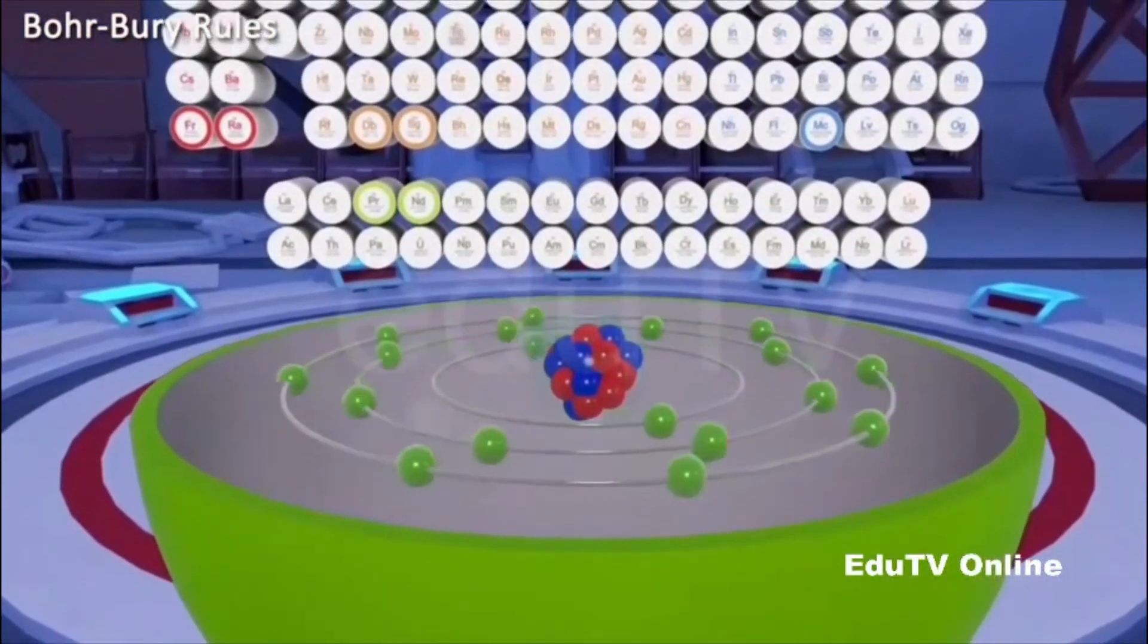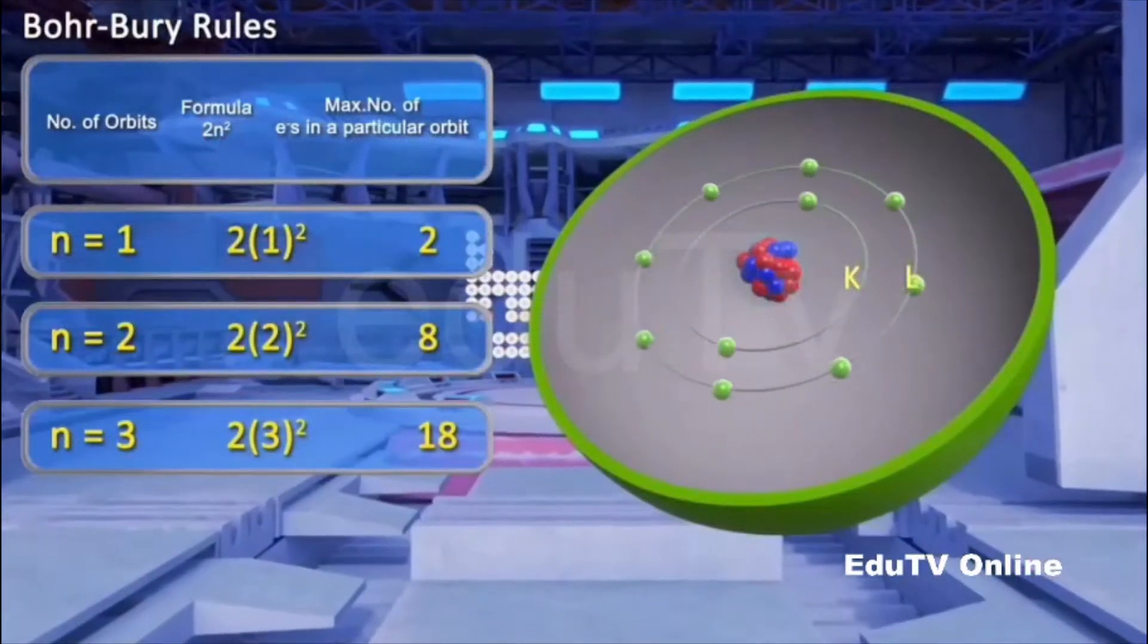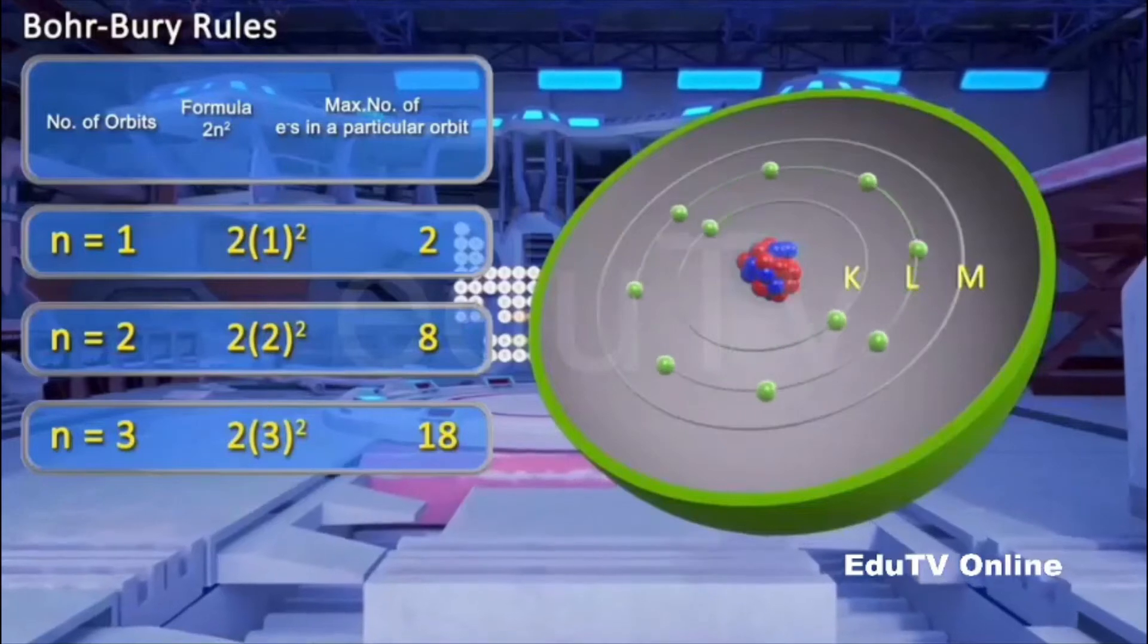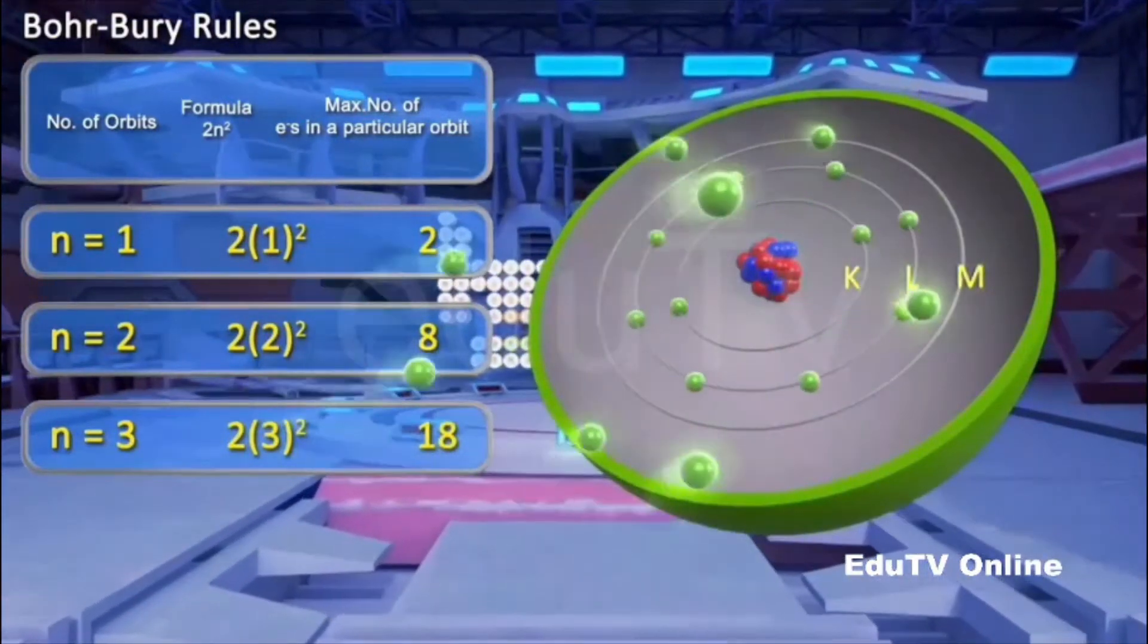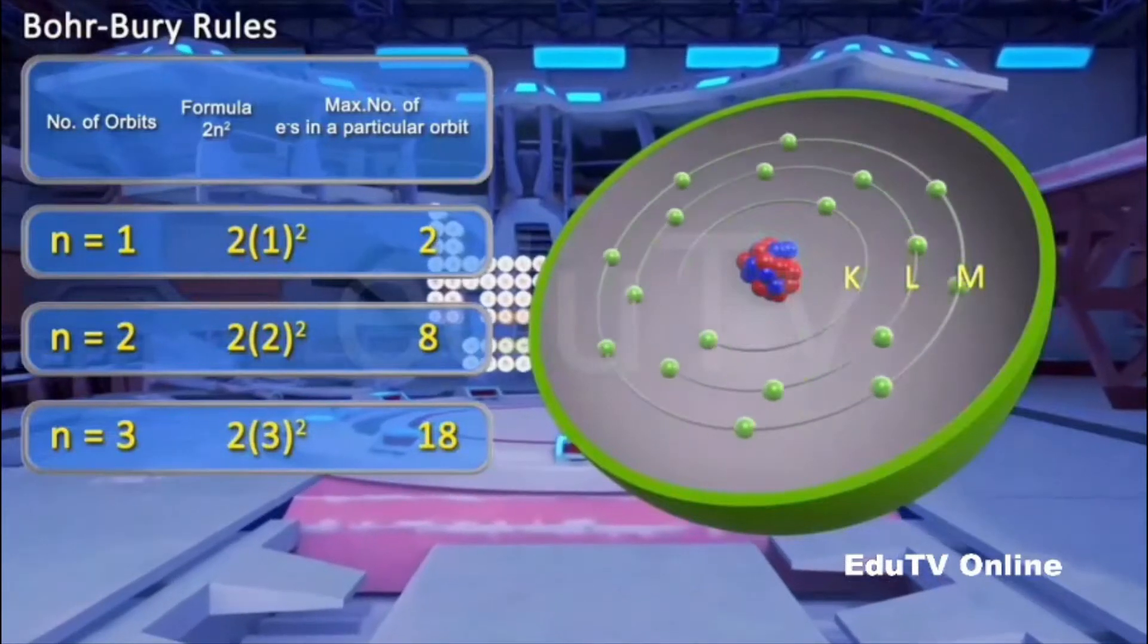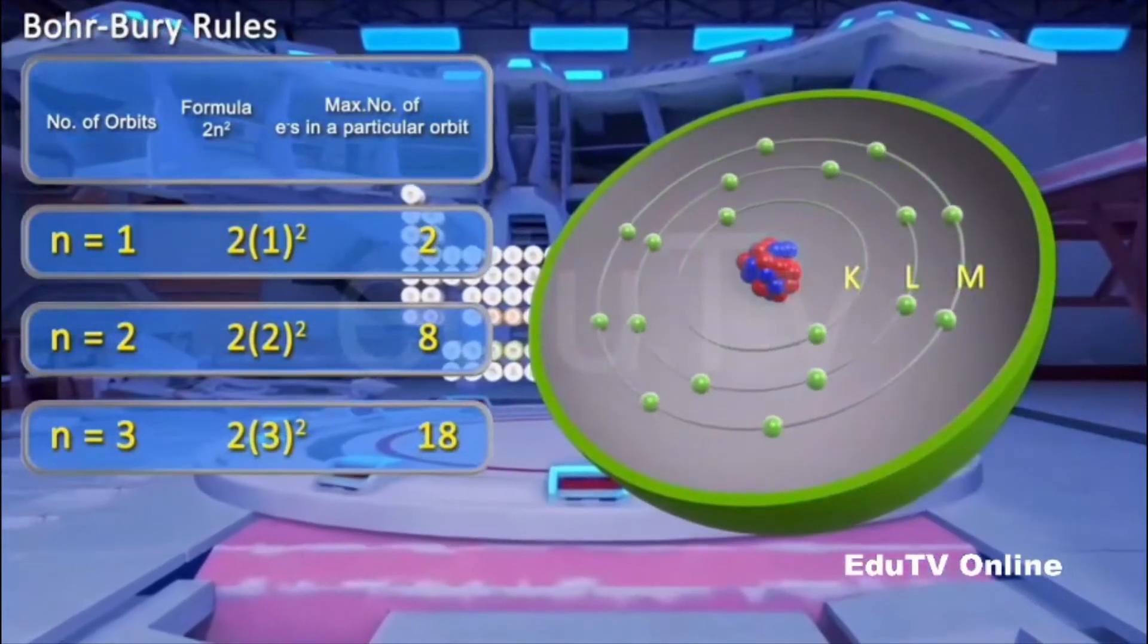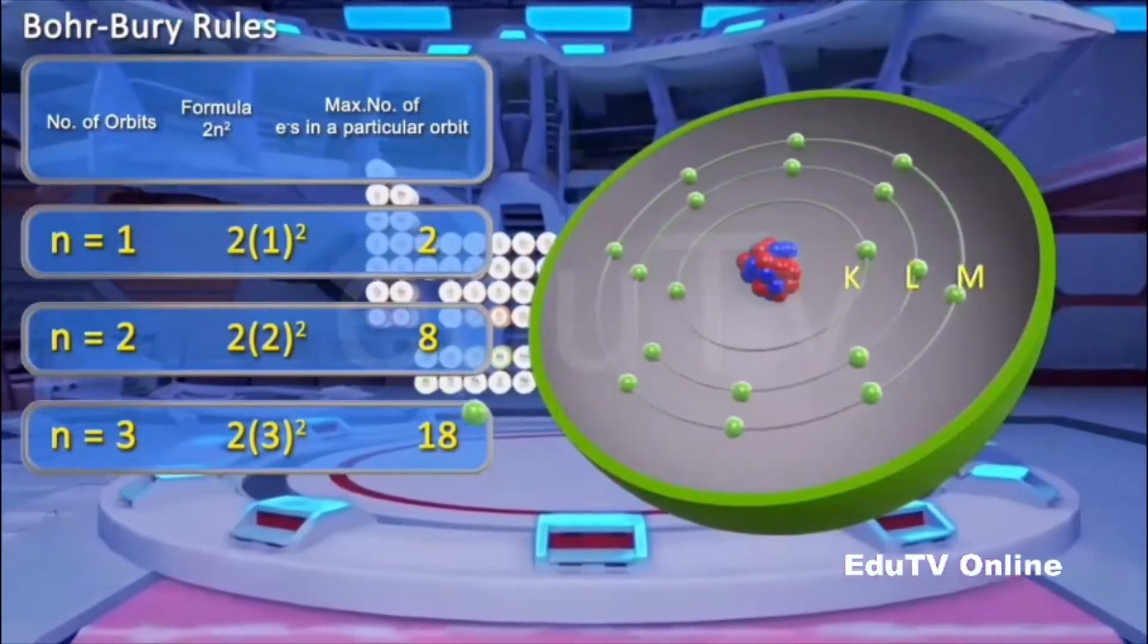For example, the third orbit can accommodate a maximum of 18 electrons. So when 8 electrons occupy the third orbit, or shell M, the atom gains a certain degree of stability. Hence, the next electron, instead of entering the third orbit, goes into the fourth orbit, or shell N.